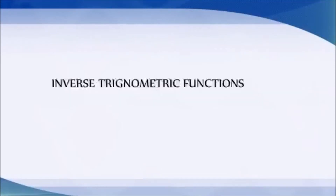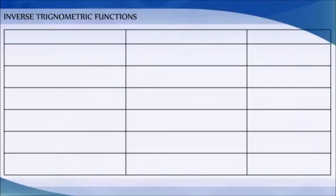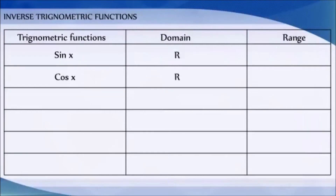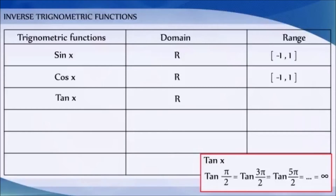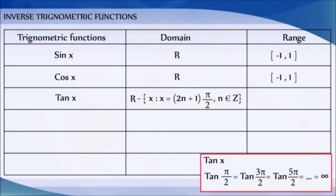In earlier classes, you learned about trigonometric functions, their domains and ranges. The domain of sine and cosine functions is the set of real numbers, and their ranges are from minus 1 to plus 1. The domain of the tangent function is the set of all real numbers except the odd multiples of pi by 2, since tan is infinity at those points. The domain of tangent is all real numbers except x equal to (2n+1)·π/2, where n belongs to integers, and its range is the set of all real numbers.